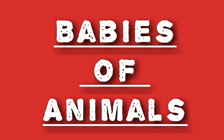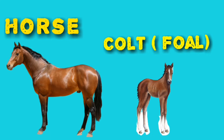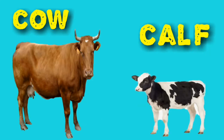Babies of Animals. Cub — the baby of lion is called cub. Colt, foal — the baby of horse is called colt, foal. Calf — the baby of cow is called calf.